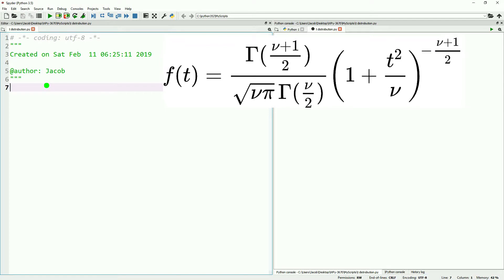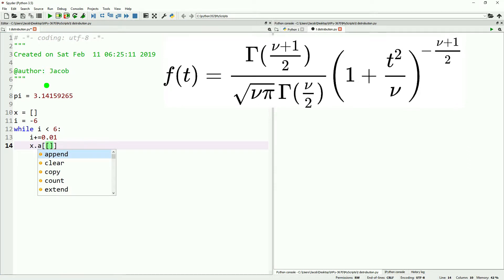We'll get started by defining a constant, and then by making a range of x values that will represent each stepwise value for t in our t distribution. We'll do negative 6 to positive 6, stepping by 1/100 each time, appending each value to our x.